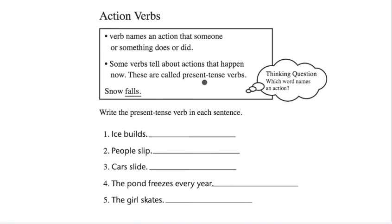Because we know that when something is happening now, that is in the present. So I want to go back up here again and talk about a verb. A verb names an action — maybe you've heard of the word verb before. A verb is an action word. It names an action that someone or something did or does. Today we're going to talk about a verb in the present tense. Let's look at an example.